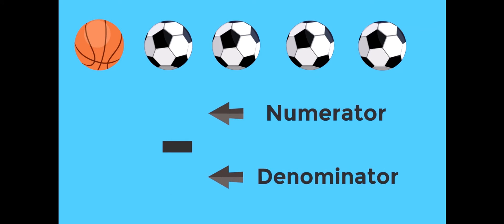A fraction has a line in the middle — the top number is the numerator and the bottom number is the denominator. The denominator shows us the total number of parts or units. How many sports balls are there? Five — five is the denominator. Now, we're asking for the fraction of sports balls that are basketballs, so how many basketballs are there? Just one — the number one is the numerator. So one-fifth of the sports balls are basketballs.